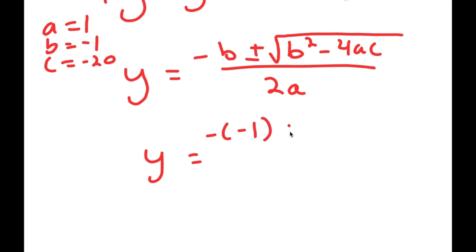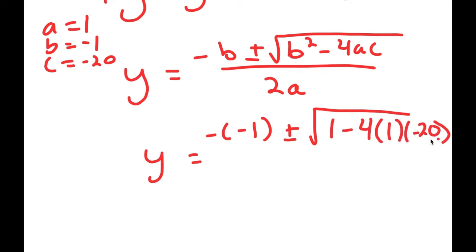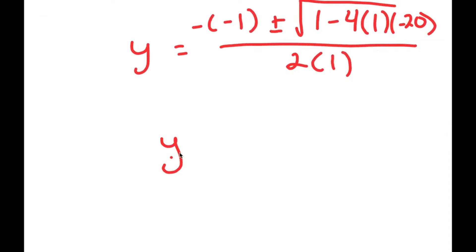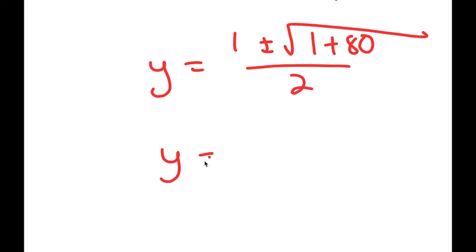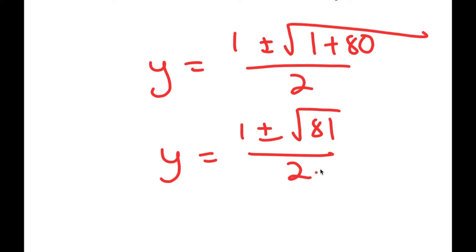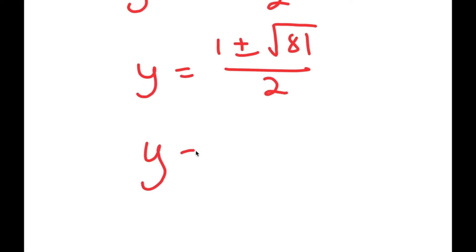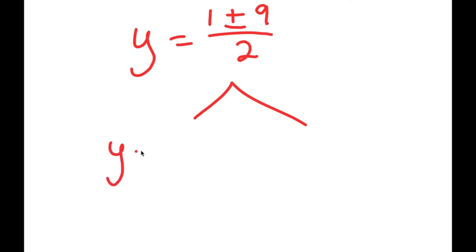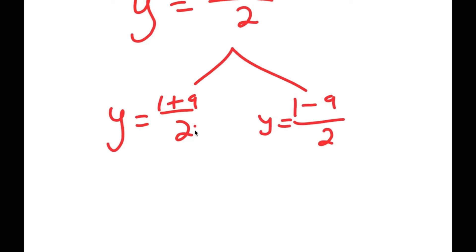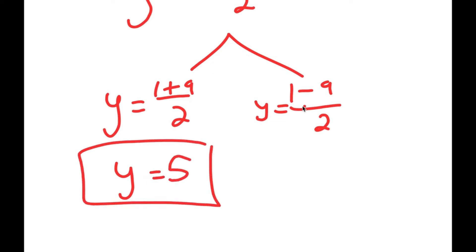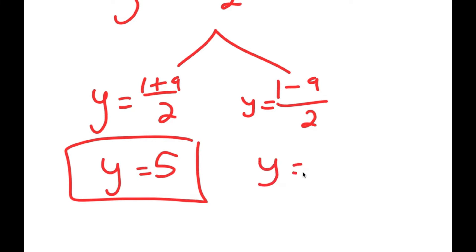So I get y equals negative negative 1 plus or minus the square root of negative 1 squared, which is positive 1, minus 4 times 1 times negative 20, all over 2 times 1. This equals 1 plus or minus the square root of 1 plus 80 over 2, which is 1 plus or minus the square root of 81 over 2. The square root of 81 is 9, so y equals 1 plus or minus 9 over 2. This gives two solutions: y equals 1 plus 9 over 2, which is 10 over 2 equals 5; and y equals 1 minus 9 over 2, which is negative 8 over 2 equals negative 4.